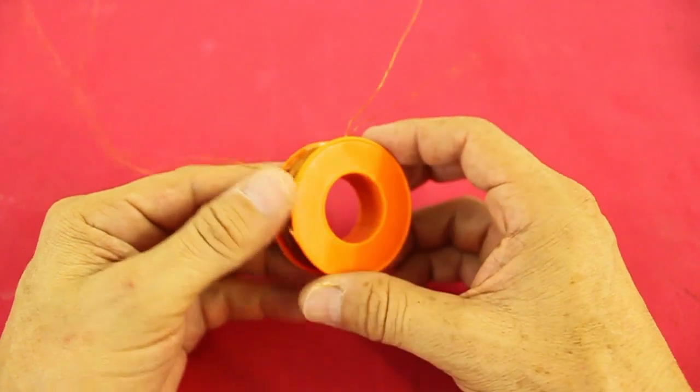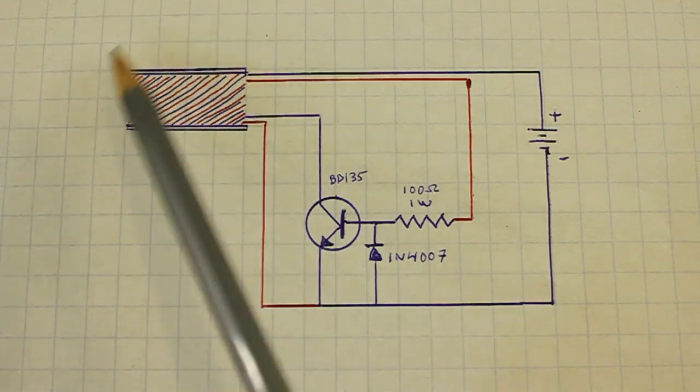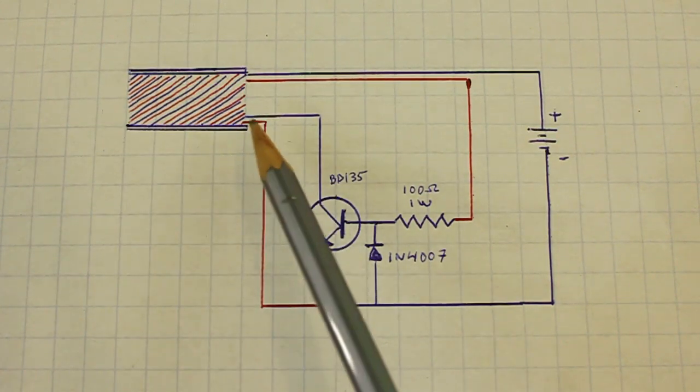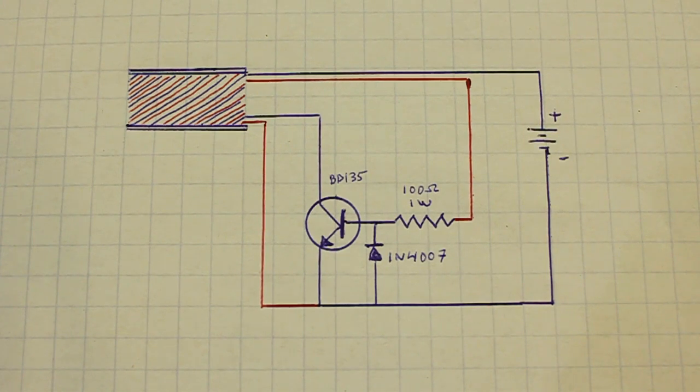Now let's see the connections of the motor. Here we have our coil, two wires at the beginning and the other two at the end. In red we have the thin wire and the thick one is in blue.